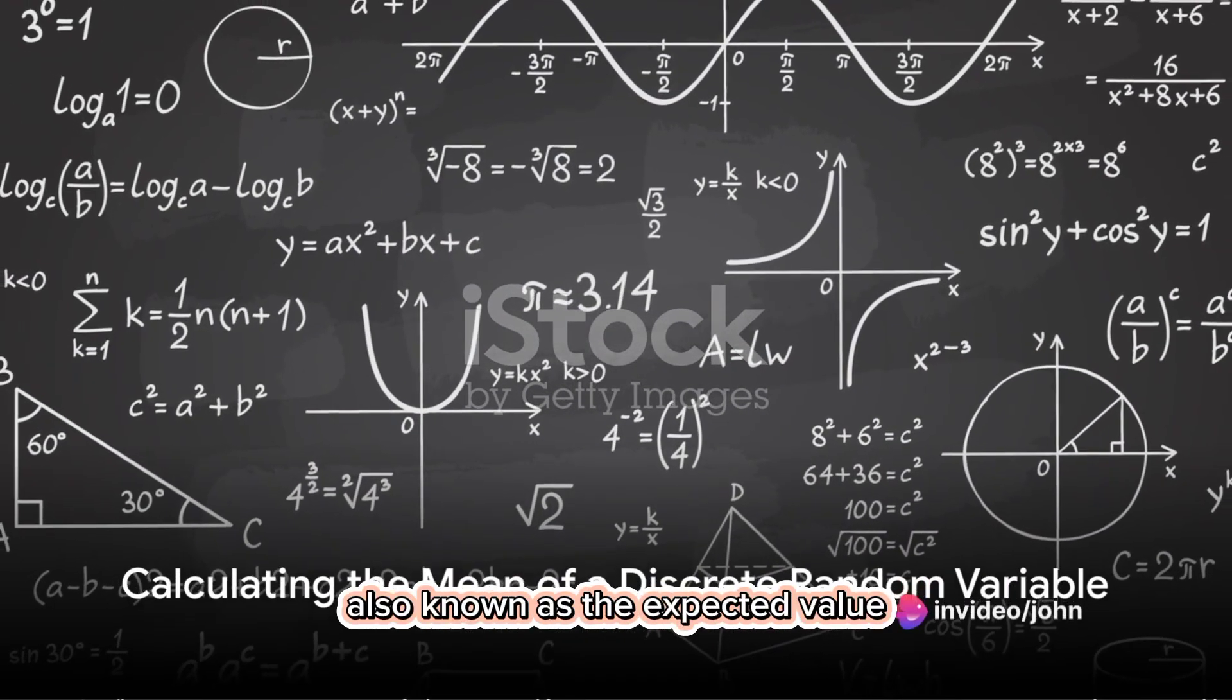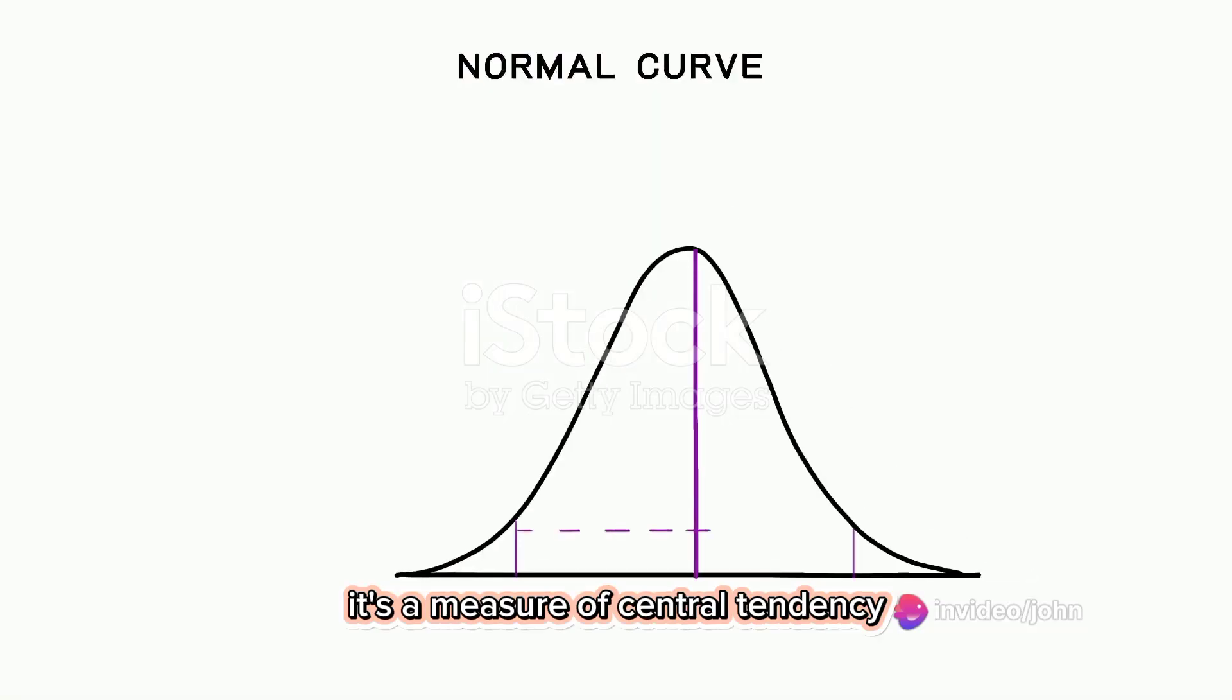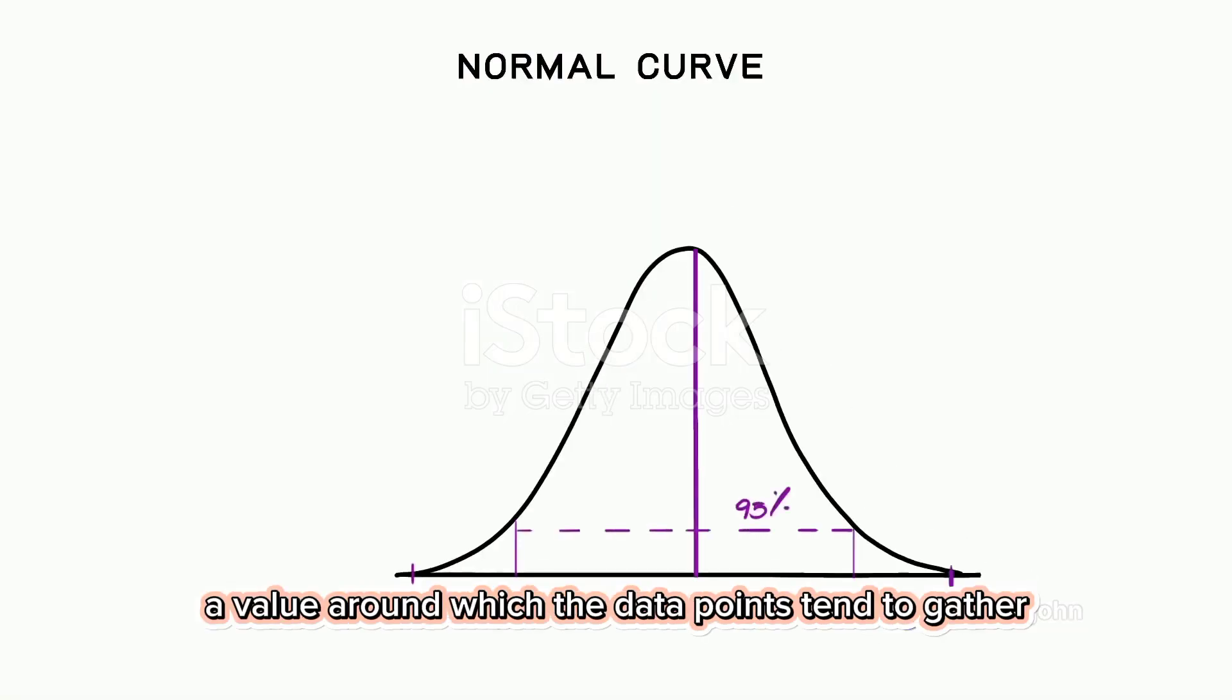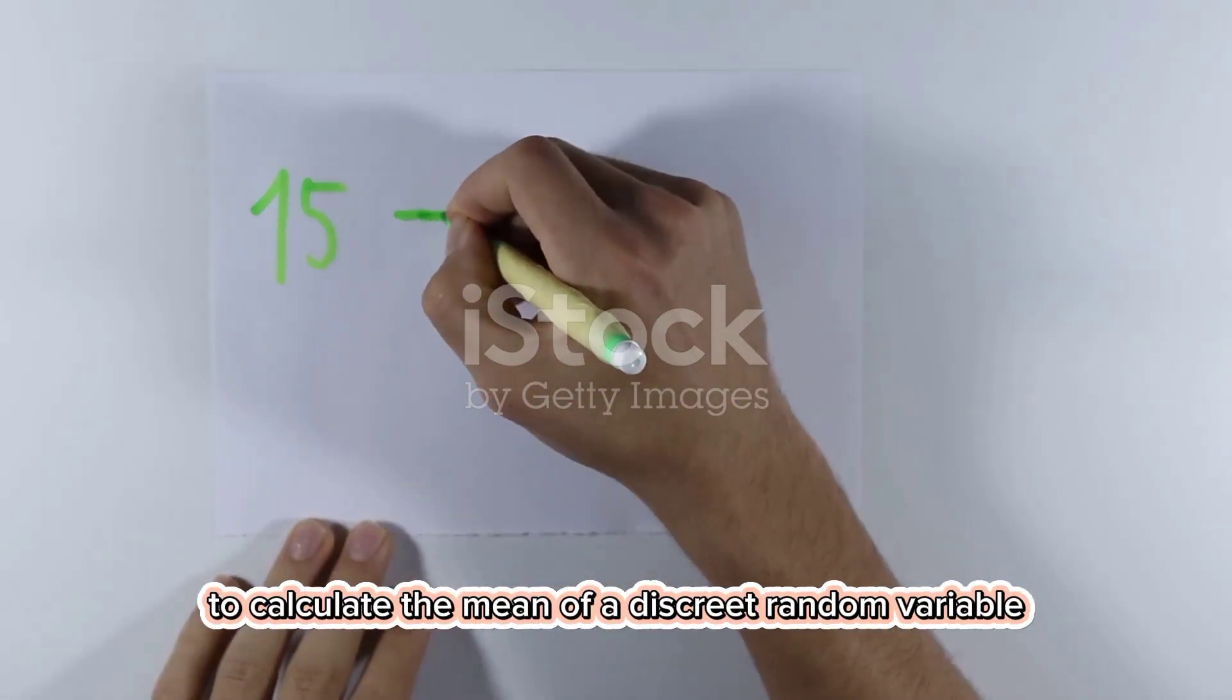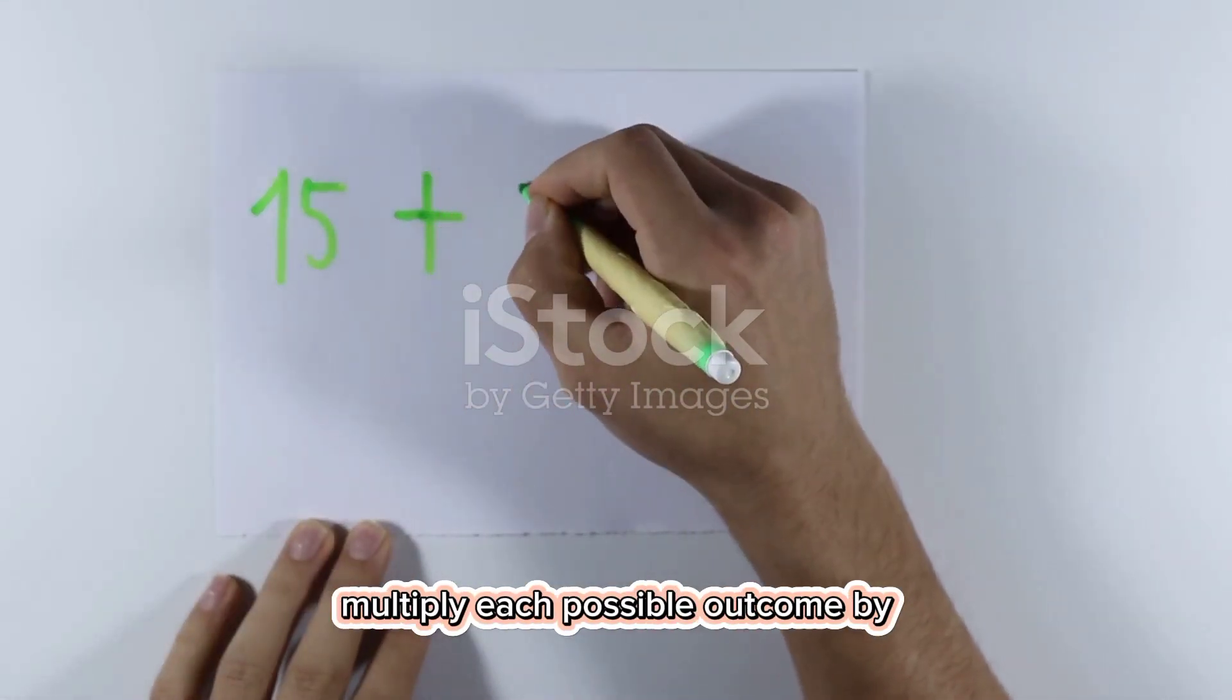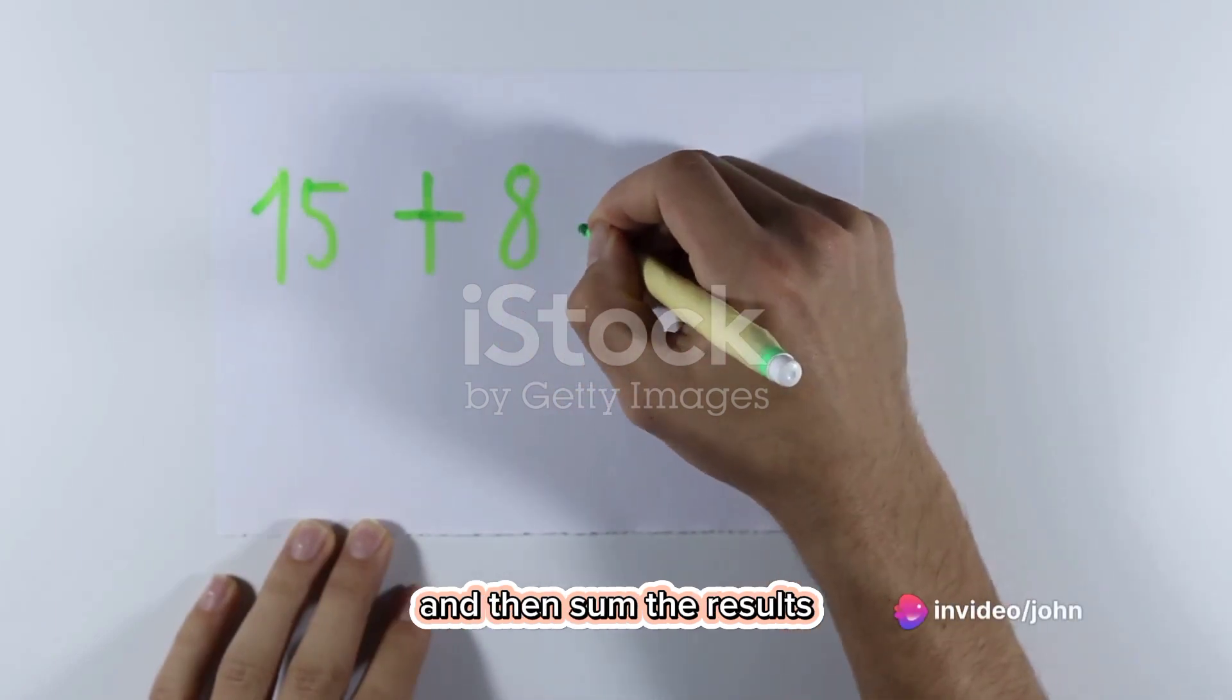Now on to the mean, also known as the expected value. It's a measure of central tendency, a value around which the data points tend to gather. To calculate the mean of a discrete random variable, multiply each possible outcome by the probability of that outcome, and then sum the results.